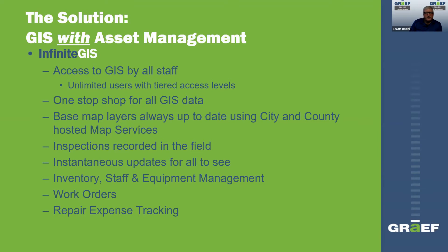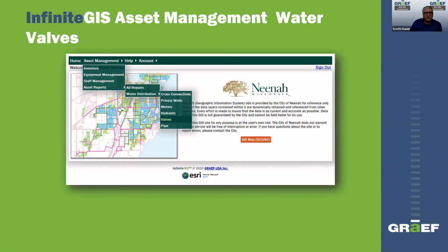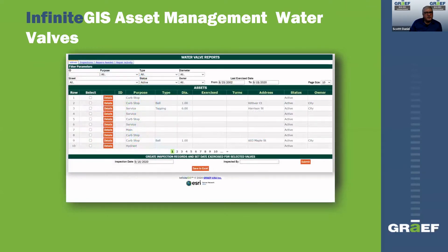Neenah has a custom web interface that gives them access to their GIS, with menus for accessing different reports and things. This is a dropdown menu — jumping to the valve tool, you can see that they can filter all of the valve data with filters on top and display just what they need. They can put in exercise date ranges, which default to the current year, so they can quickly gather up the information they need for their PSC report.